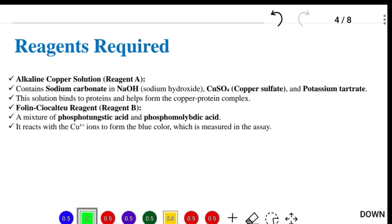For this method, reagents required include alkaline copper solution, which is Reagent A. It contains sodium carbonate, sodium hydroxide, copper sulfate, and potassium tartrate. This solution binds to proteins and helps form the copper-protein complex. The next one is Folin-Ciocalteu reagent, also known as FC reagent. This mixture contains phosphotungstic acid and phosphomolybdic acid.